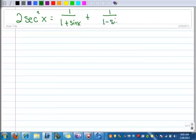Alright, let's do another example. So 2 secant squared x is equal to 1 over 1 plus sine x plus 1 over 1 minus sine x.